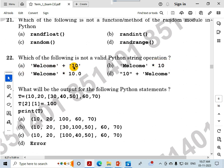Option A: 'Welcome' + '10'. Since 10 is written inside single quotes, it's a string. The plus operator with two strings is the concatenation operator. So string 'welcome' will be concatenated with string '10', giving you the answer 'welcome10'.